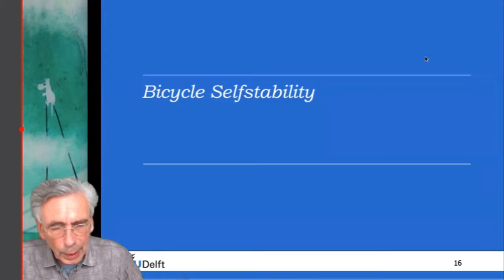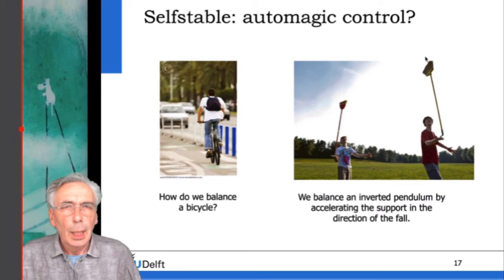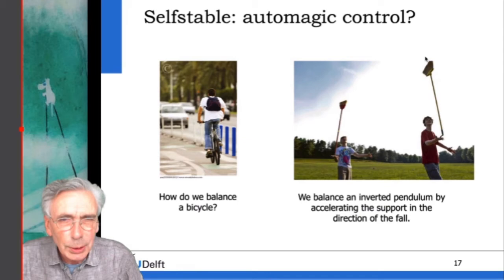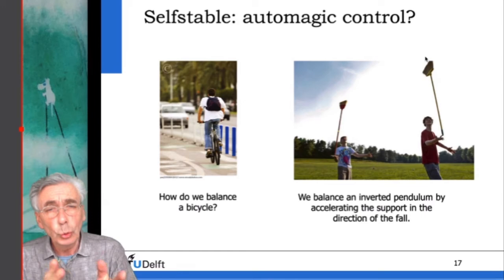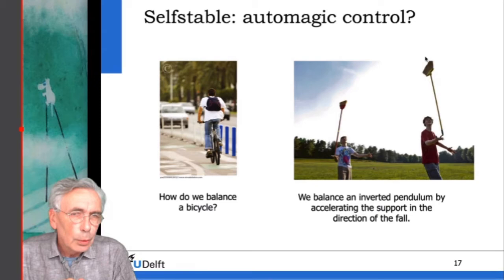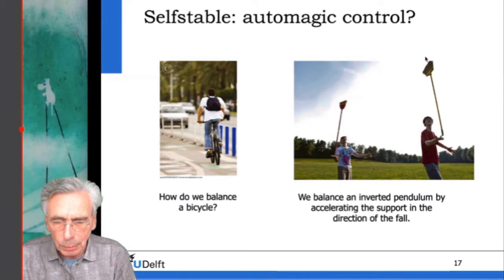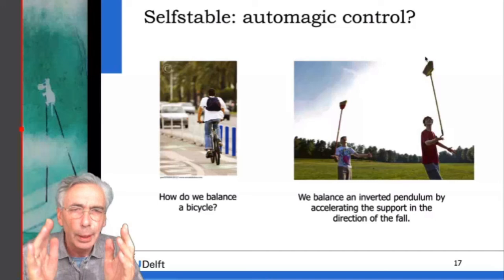Bicycle self-stability: the big question is how does a bike stay upright? That's complex, so a simpler question is: how do we balance a bicycle? Usually I ask the audience what they do to balance their bike, and all kinds of answers come up, but nobody knows exactly. An even simpler framing: a bicycle is like an inverted pendulum. How do we balance an inverted pendulum?